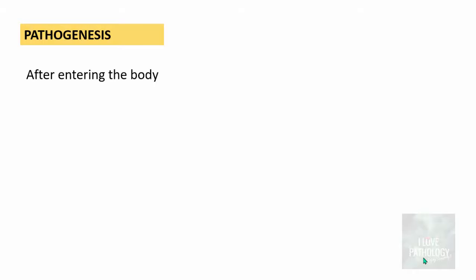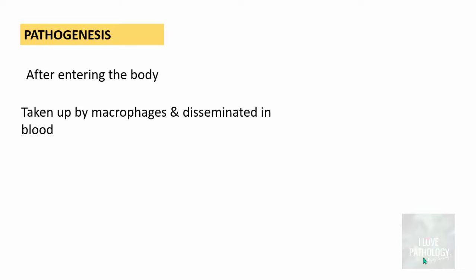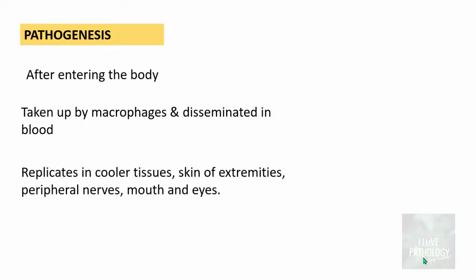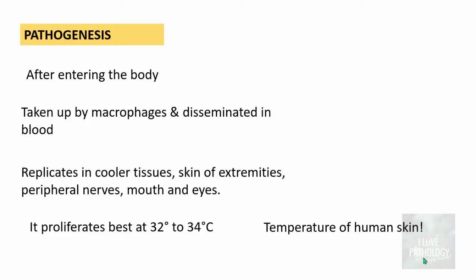Now let's understand how the leprae bacilli gets into the body and causes damage. After entering through the respiratory route, it resides in the alveolar macrophages. The bacilli accumulate in the macrophages and are then disseminated in the blood. Importantly, leprae bacilli replicate in cool tissues — particularly the skin of extremities, peripheral nerves, mouth, and eyes. Proliferation is best at 32 to 34 degrees centigrade, which is the temperature of human skin, and that is why leprosy affects the skin and peripheral nerves.